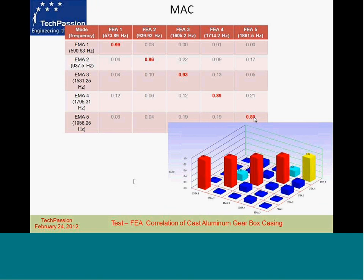This is very good correlation. The benchmark for saying something is well-correlated can vary, but in general in the automotive industry, above 80% MAC indicates good correlation between test and FEA vibration data and you can move on. Then comes the follow-up question: if the correlation is not good, what do you do? That's when the process of model updating comes in — you modify the finite element model automatically in certain cases to get good correlation. But that's not the topic of today's presentation.